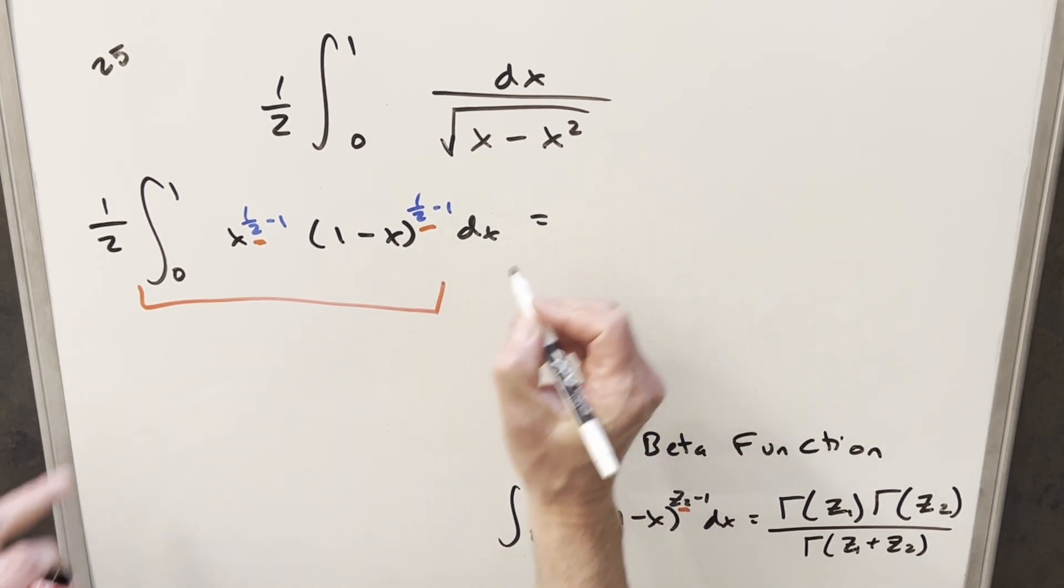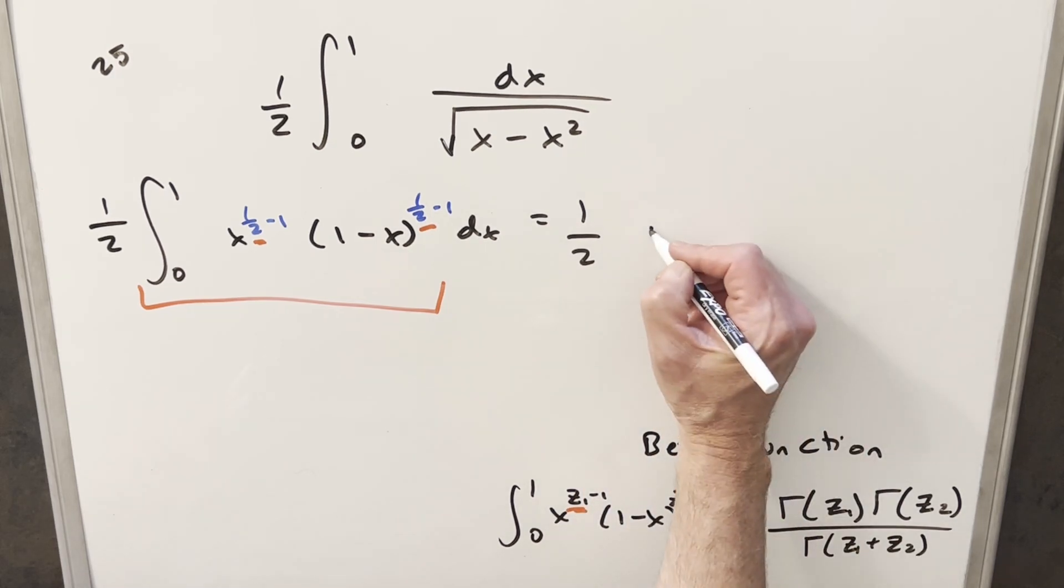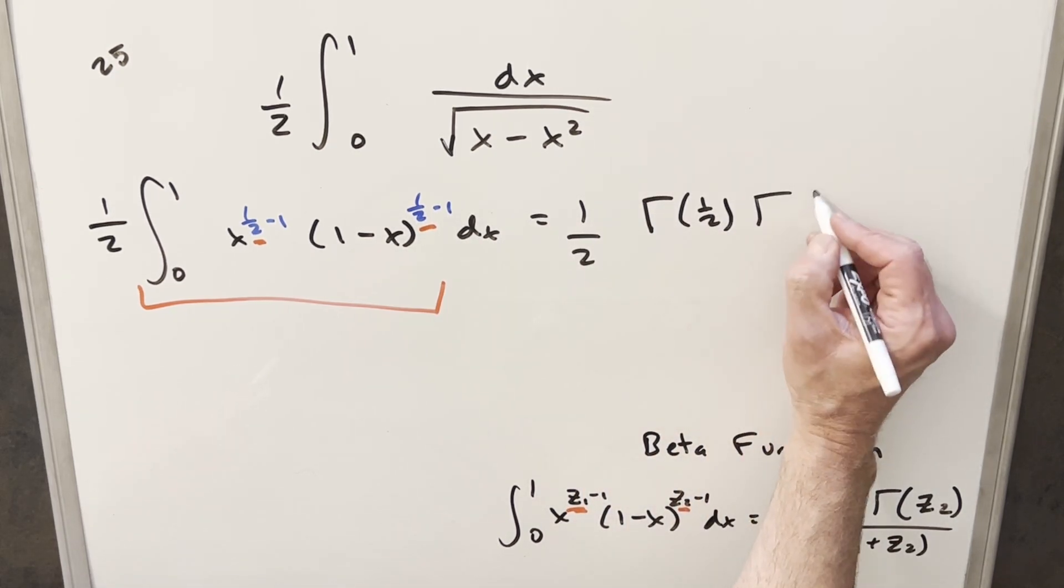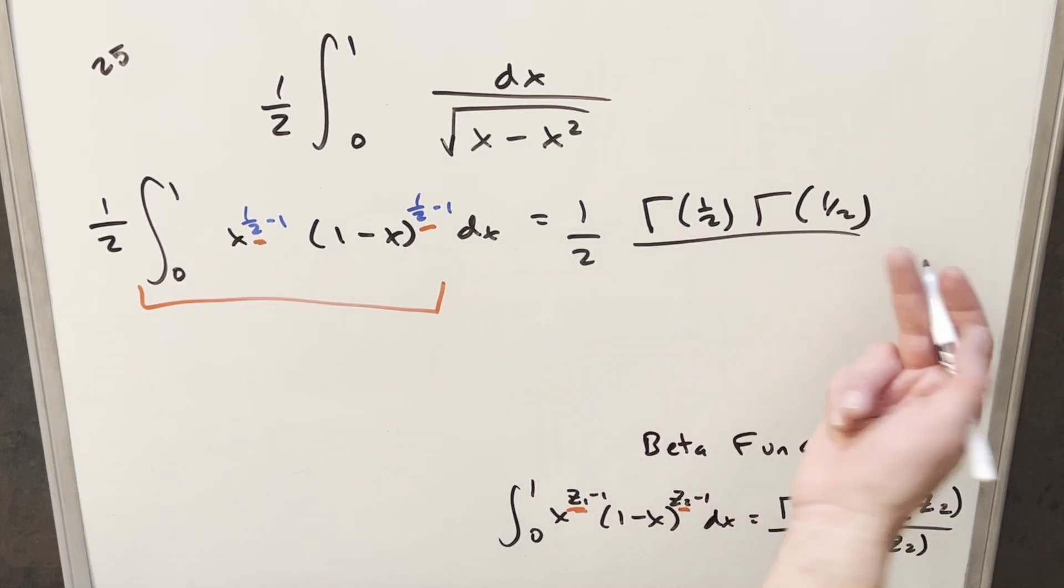So coming over here for our solution, let's just bring over this 1 half in front. This is going to become, using this, gamma of 1 half times gamma of 1 half over gamma of the sum of 1 half plus 1 half. So this is just going to be the gamma of 1.